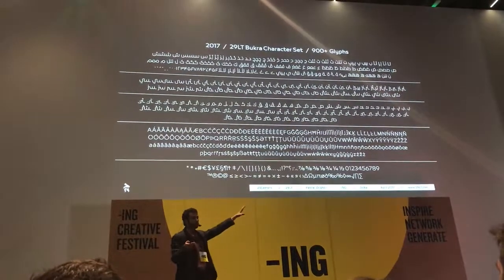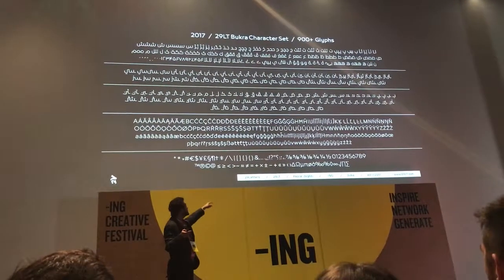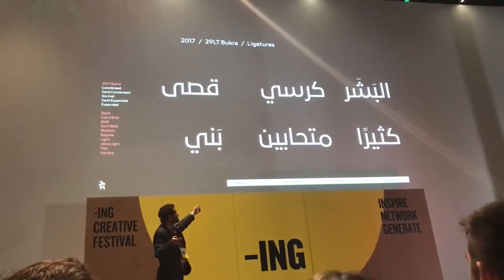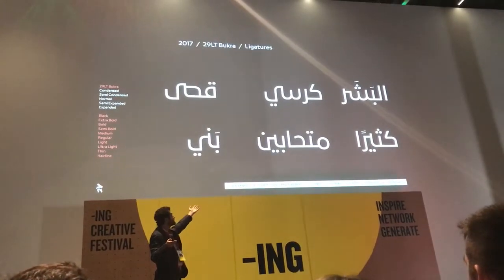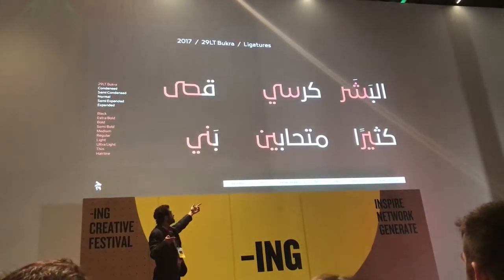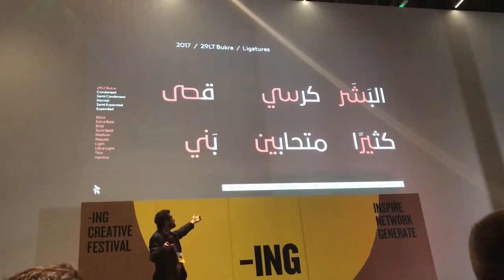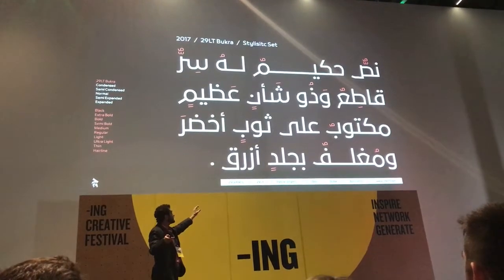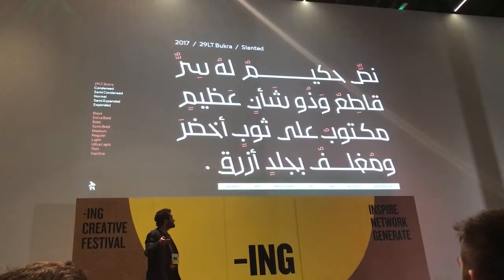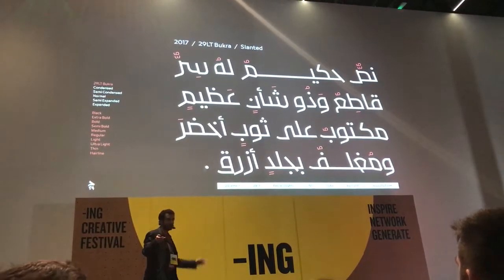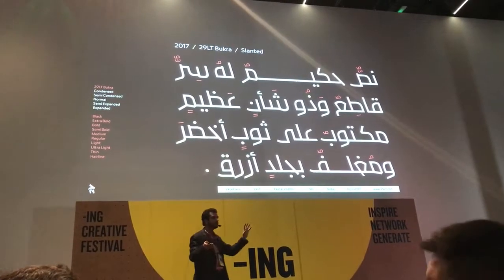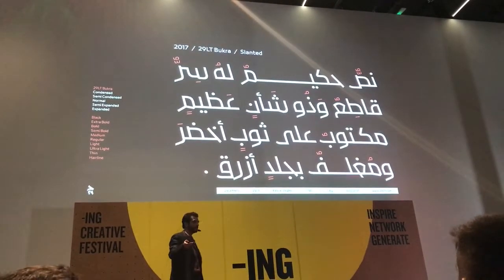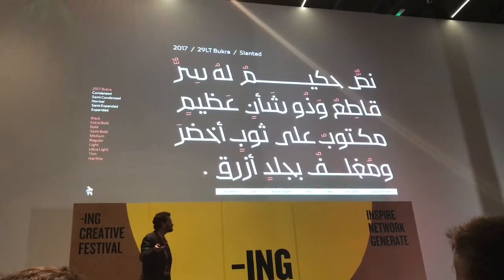The font grew from around 400 to over 900 glyphs. We added stylistic sets, ligatures, and extra features. So for example, the ligatures, the precise alternate features, the stylistic sets, and the slanted — it really gives different forms to the font and makes it applicable to a whole range of applications and projects.